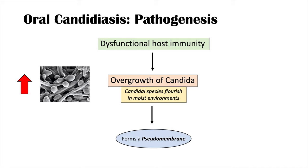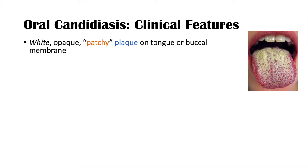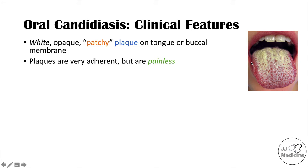Clinical features of oral candidiasis include a white opaque patchy plaque on the tongue and/or the buccal membrane — the inside of the cheeks. The plaque is patchy, not completely filled in everywhere, and it can appear inside the cheeks as well. The plaques are very adherent and difficult to scrape off the tongue, but for the most part the plaque is painless.